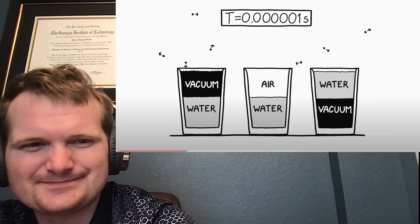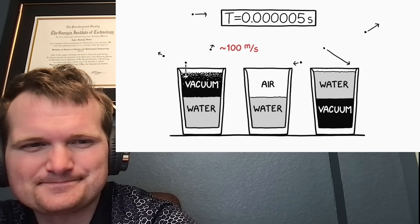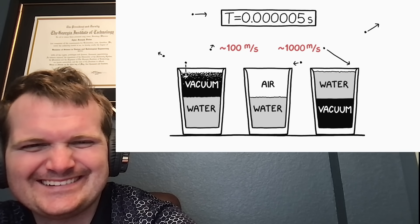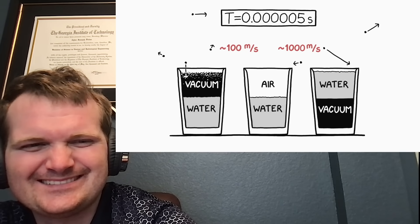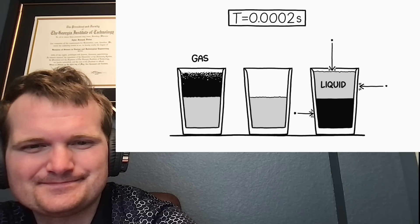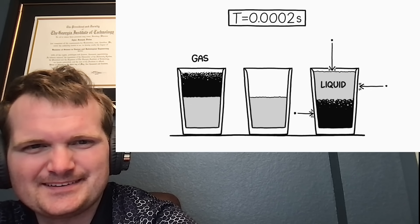For the most part, air molecules jiggle around at speeds of a few hundred meters per second. But, at any given time, some of them happen to be moving faster than others. The fastest few are moving at over a thousand meters per second. These are the first few to drift into the vacuum in the glass on the left. The vacuum on the right is surrounded by barriers, so the air molecules can't easily get in. The water, being liquid, doesn't expand to fill the vacuum in the same way that air does. However, in a vacuum, it does start to boil, slowly shedding water vapor into the empty space.